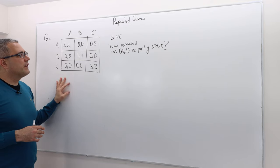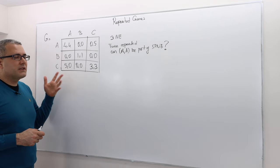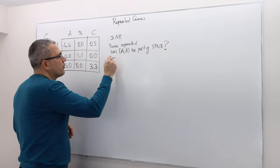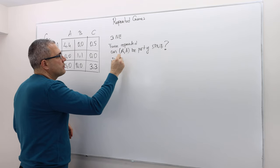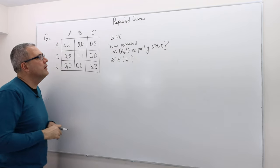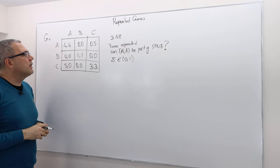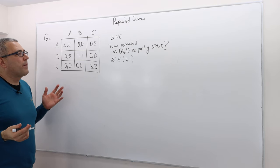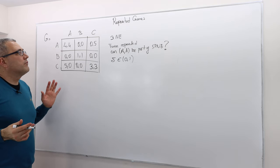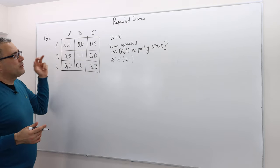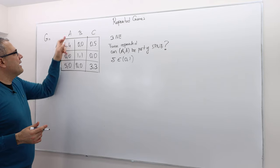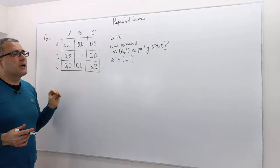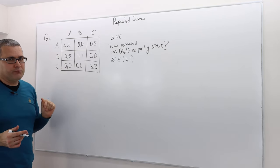So in this game, twice repeated, let's suppose there's a discount factor delta for both players, which is some number between zero and one. The question is: can action profile AA be part of a subgame perfect Nash equilibrium?